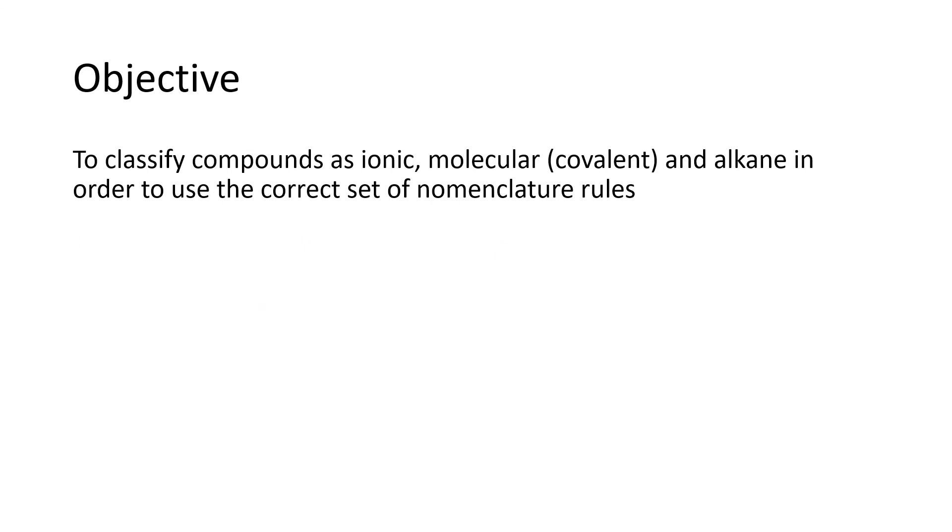Our objective was to classify compounds as either ionic, molecular, or alkane. And so hopefully we saw the rules. We actually do that classification kind of in the opposite order. Alkanes are only carbon and hydrogen, and molecular are a nonmetal plus a nonmetal, and ionic will be a metal plus a nonmetal.